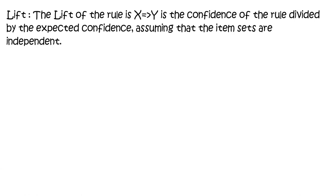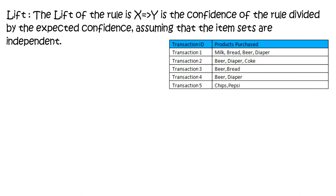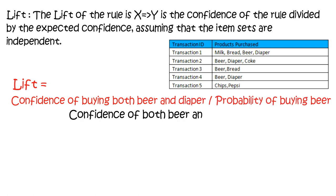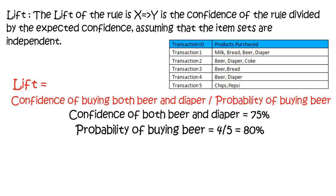Lift of the rule X implies Y is the confidence of the rule divided by the expected confidence, assuming that the item sets are independent. Lift equals the confidence of buying both beer and diaper divided by the probability of buying beer. The confidence of buying both beer and diaper is 75%, while the probability of buying beer is 80%. Therefore, lift equals 0.93.